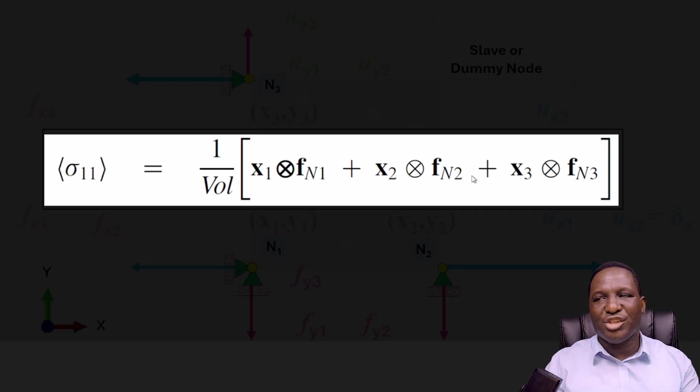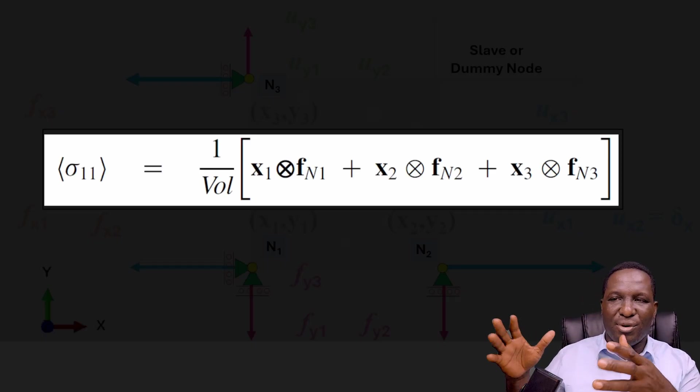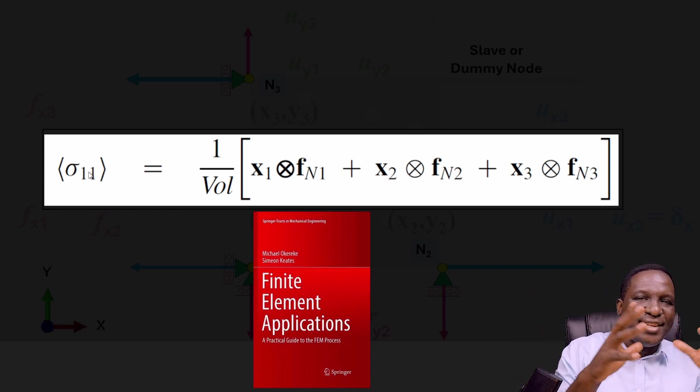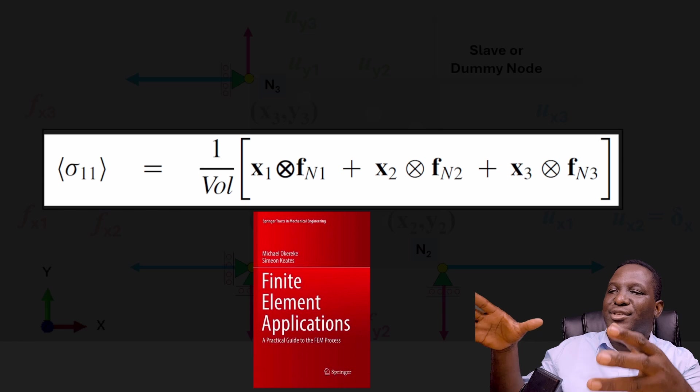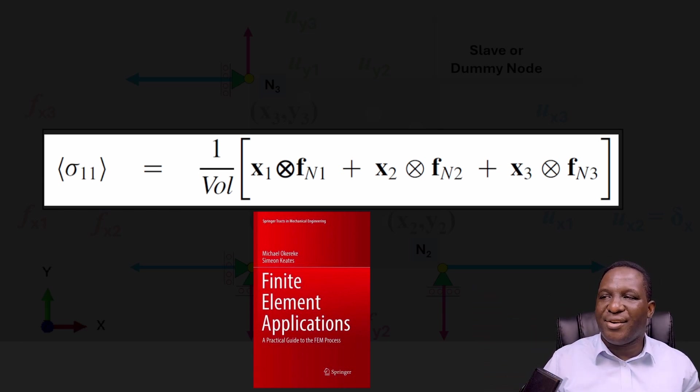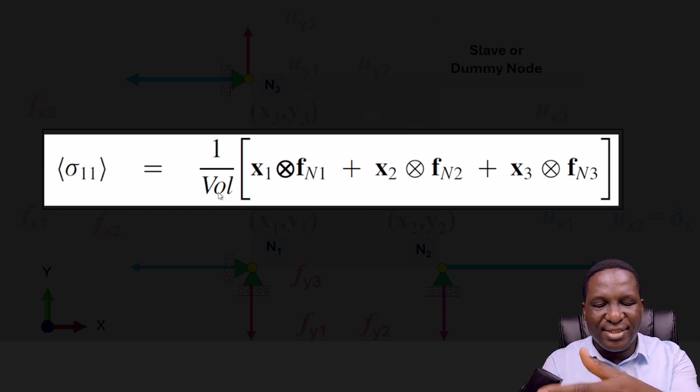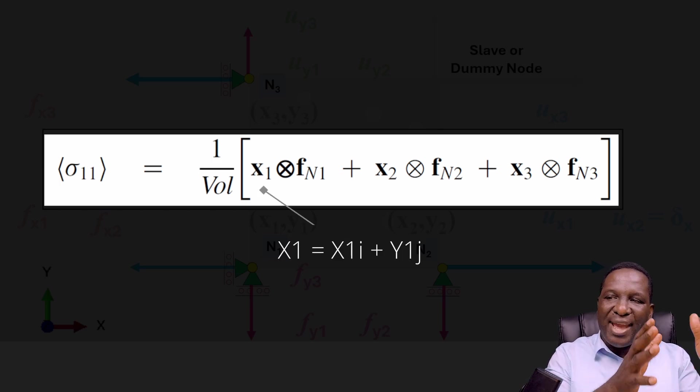There's an equation in the literature—if you have access to my book, you can extract this equation. This is a homogenized stress equation that helps you generate the stress history on this material. With that stress history, we can evaluate volume. Here is the volume of the stress element you're working with. What I have as x1 is not just the x component alone, but actually a position vector of x, so x1 equals x1i plus y1j.